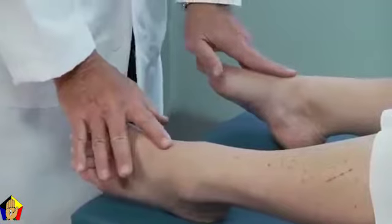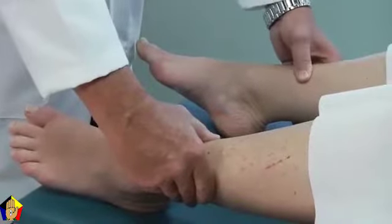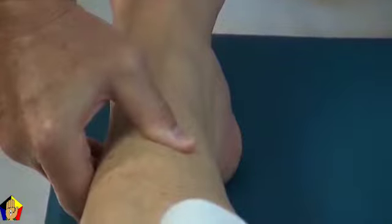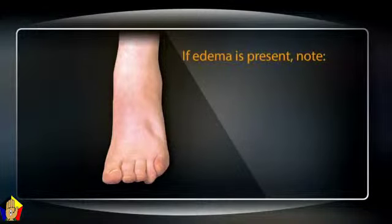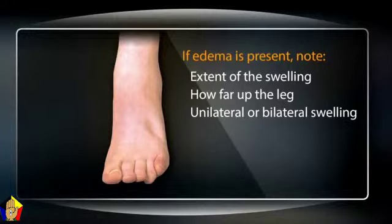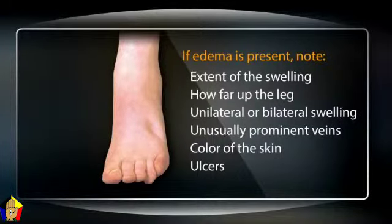Now check for edema. Comparing one foot and ankle with the other, note their relative size and the prominence of veins, tendons, and bones. To detect pitting edema, press firmly with your thumb for at least five seconds over the dorsum of the feet, behind the medial malleoli, and over the shins, noting any indentation. Normally there is none. The severity of edema is graded on a four-point scale from slight to very marked. If edema is present, note the extent of the swelling, how far up the leg it goes, and whether it is unilateral or bilateral. Note if veins are unusually prominent, and observe skin color for redness or brownish areas near the ankles, as well as any ulcers from venous stasis or arterial insufficiency.